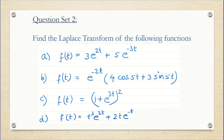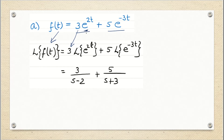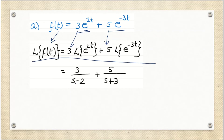Let us start with the first question: f(t) = 3e^(2t) + 5e^(−3t). We perform the Laplace transform of this function. There are two terms: 3e^(2t) and 5e^(−3t). We take out the constants for easy calculation and write down the Laplace transform of each term — Laplace of e^(2t) and Laplace of e^(−3t) — which is straightforward.